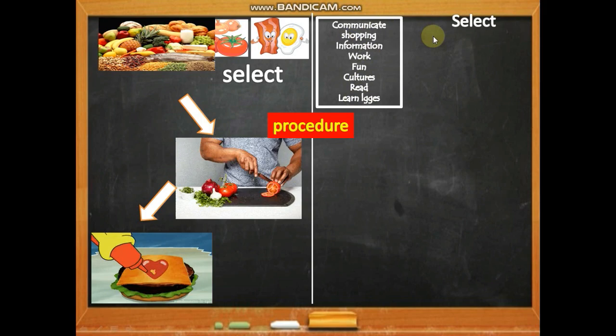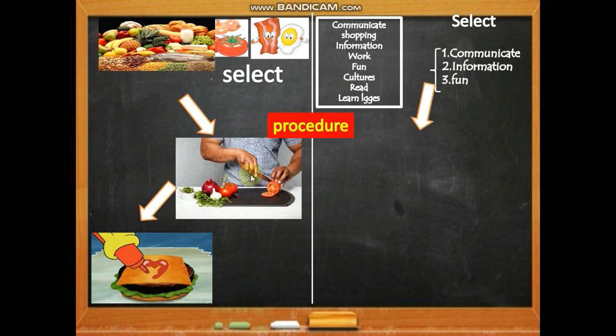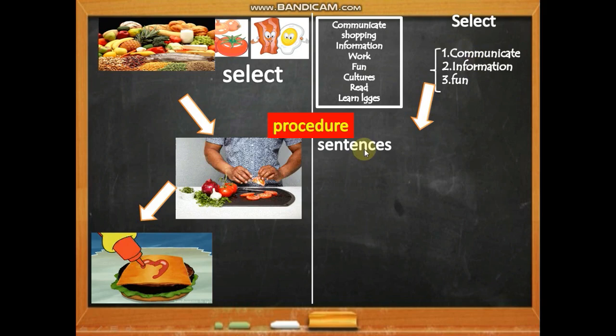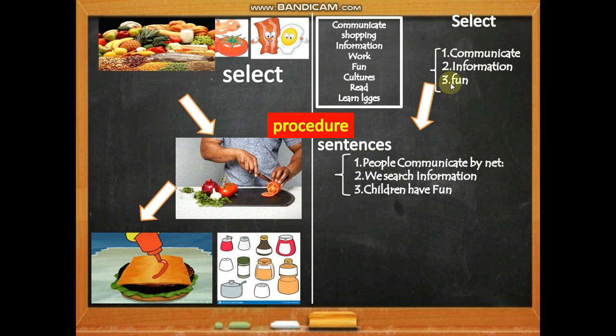Everyone is free to choose the ideas they want — for example: communicate, information, fun. We have chosen our ideas, but we can't write them as single words. We need to convert them into sentences — for example: 'communicate' becomes 'the internet lets people communicate,' 'information' becomes 'we search information,' 'fun' becomes 'children have fun.'